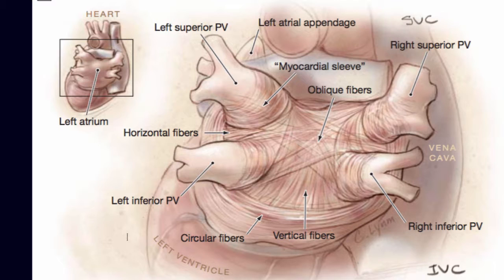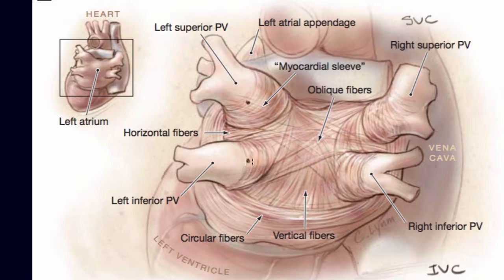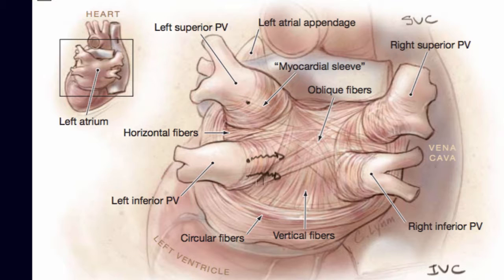Atrial fibrillation has three types: paroxysmal, persistent, and long-standing persistent or permanent. Most patients with paroxysmal AFib have AFib because there are electrical signals that come from the pulmonary veins and travel into the heart, creating what we can call short circuits.